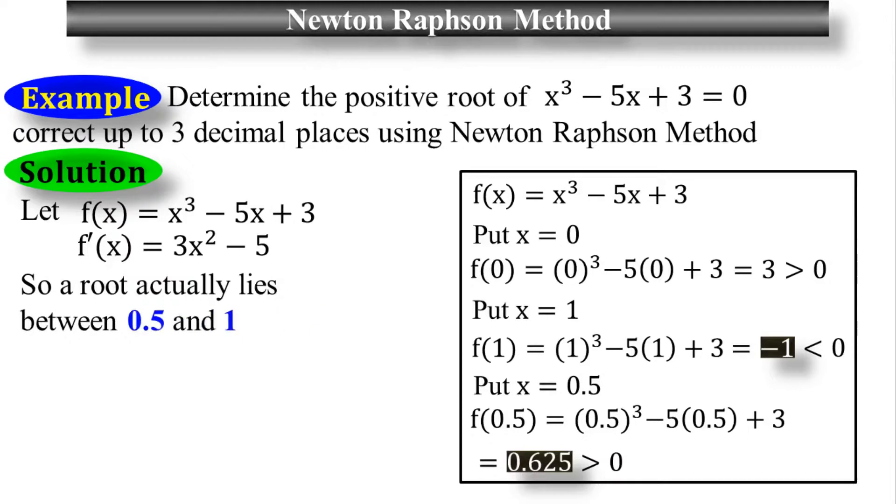So a root lies between 0.5 and 1. These are the two points where the root exists, and the initial value is 0.5 here.